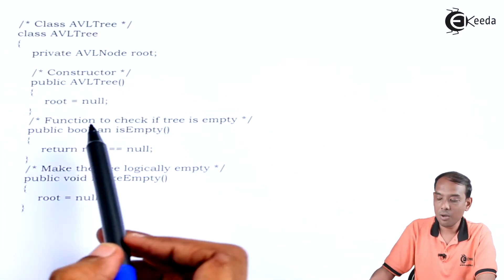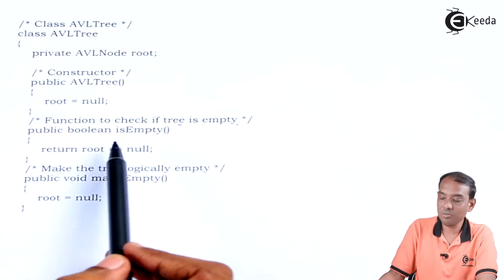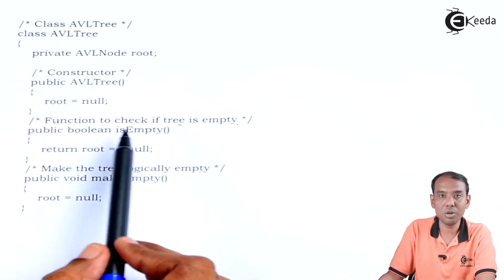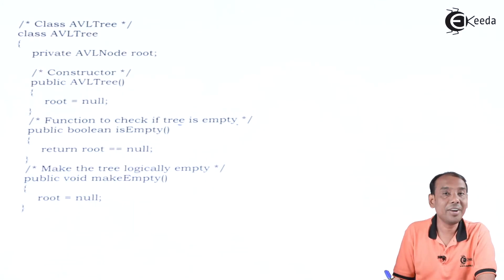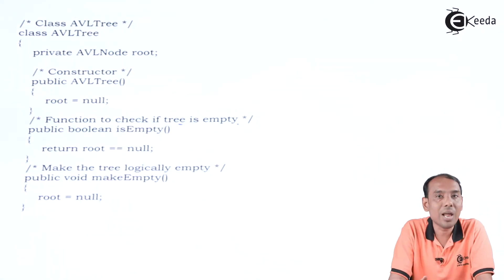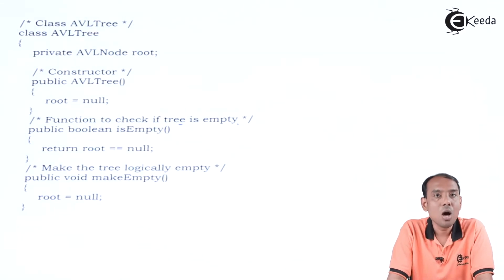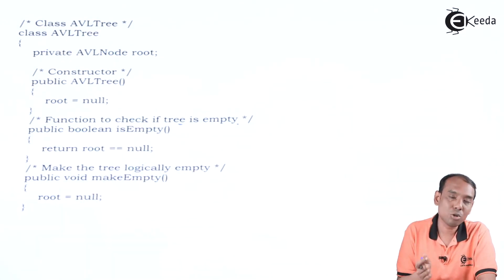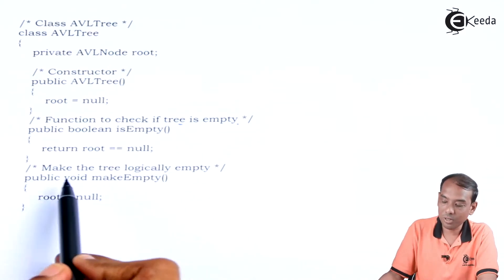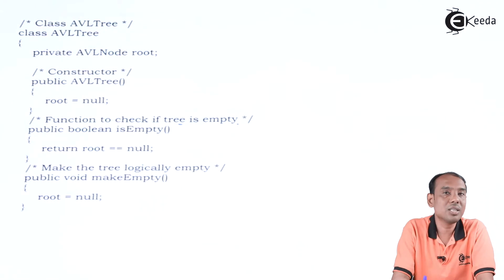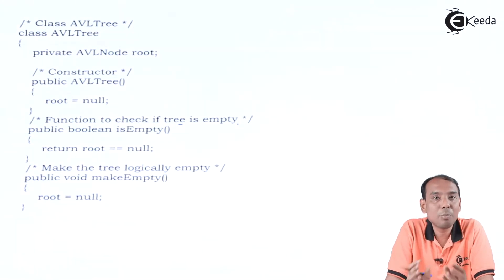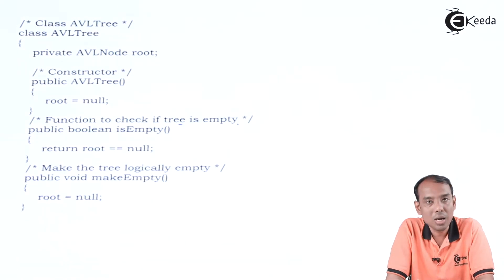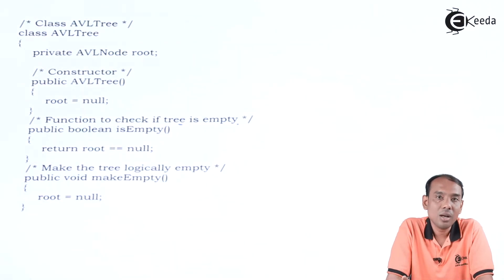Then we call the utility functions. The first function checks whether the tree is empty: public boolean isEmpty(). If the tree is empty, root will be equal to null, so we return root == null. We also have public void makeEmpty() to logically empty the tree — we purposely set root equal to null. Once root is null, every other node becomes irrelevant to the tree.